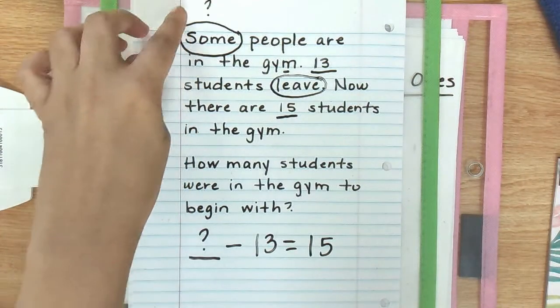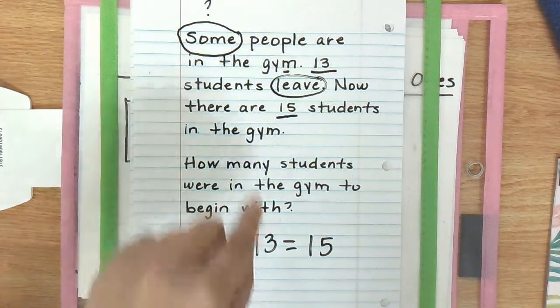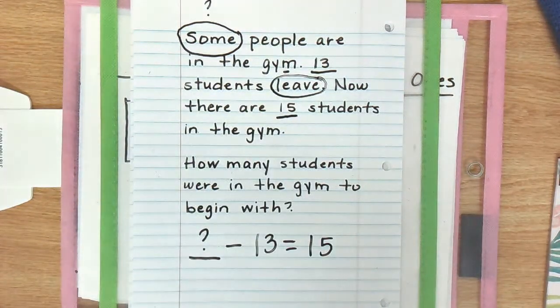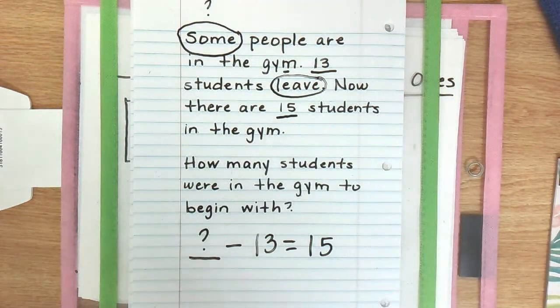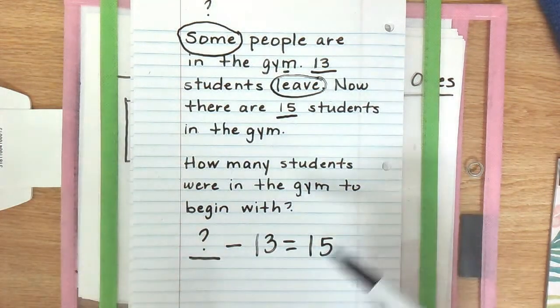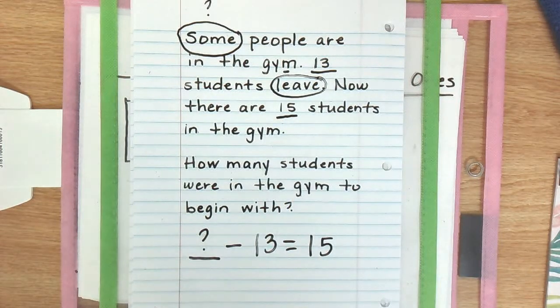That's the way we would typically look at it in the classroom. The reason for underlining and circling things is so that it automatically lays out our problem for us. We have everything we needed to know. We have our question mark, we have our 13, we have our subtraction sign, and then we have our 15. And we know that 15 is going to be our answer in this format because it says now there are 15. So that lets us know that there are 15.